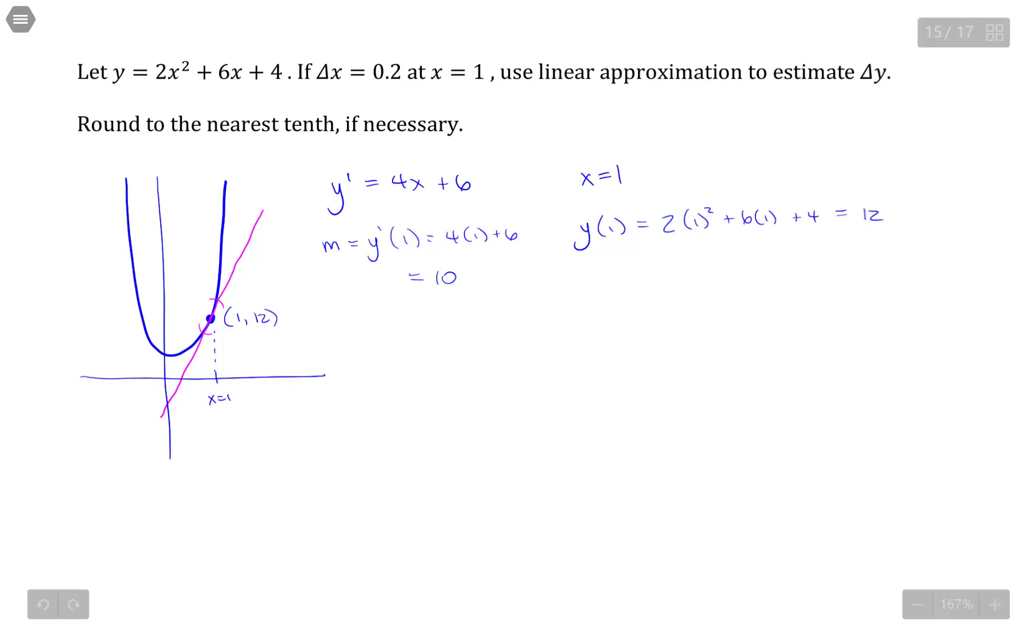Alright, now the tangent line itself. So to find the tangent line, we know we use the formula y minus y1 equals m times x minus x1. So y minus the y value of this point, so 12 equals the slope of 10 times x minus 1. So y equals 10x minus 10 plus 12 or y equals 10x plus 2.